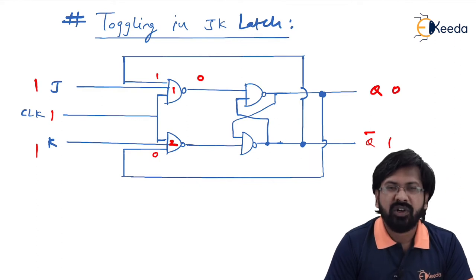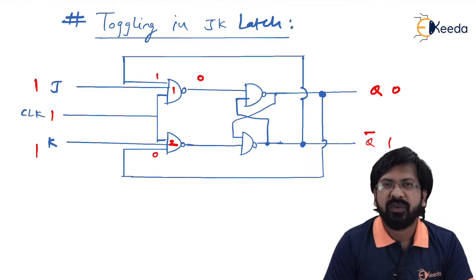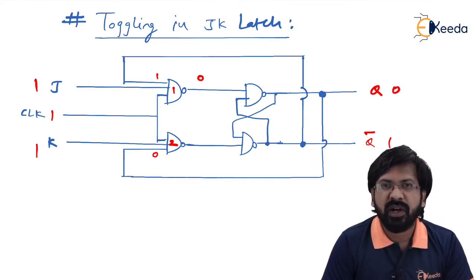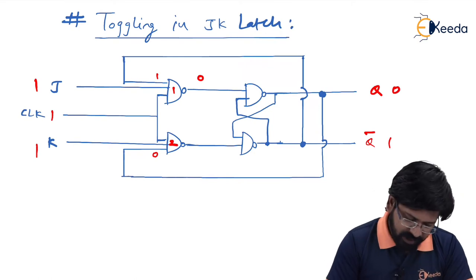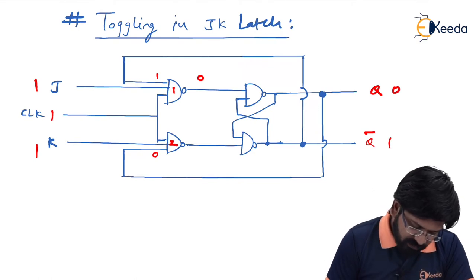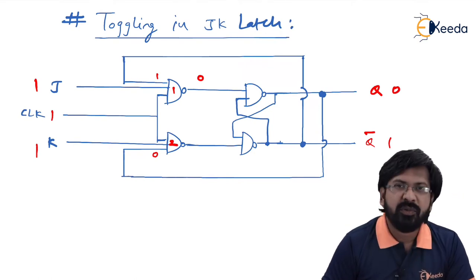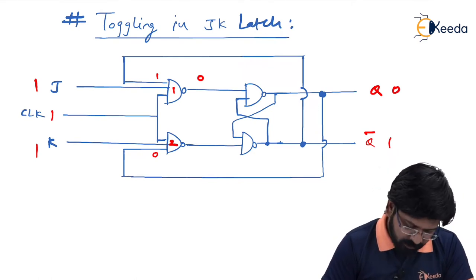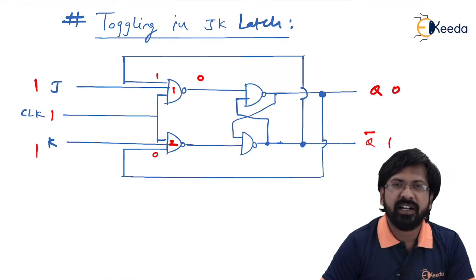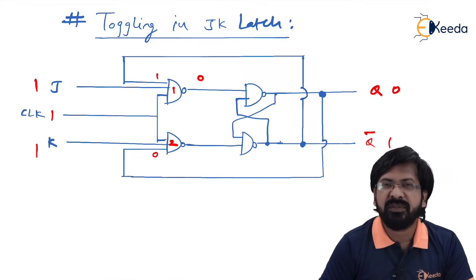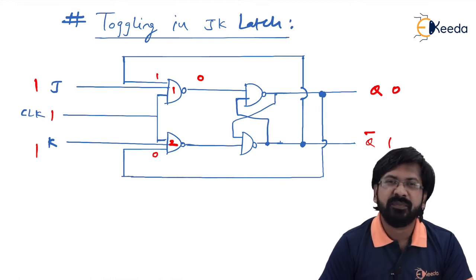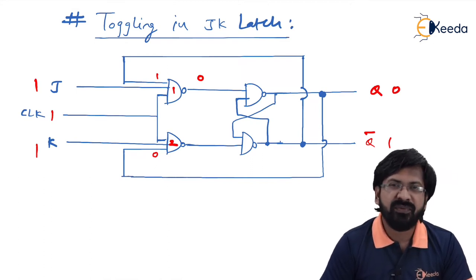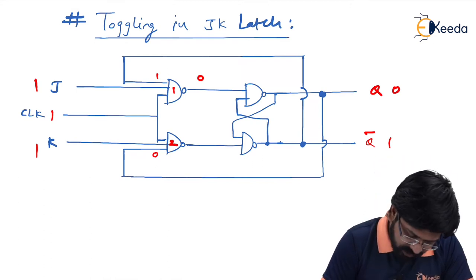Since the NAND gate has the property that when all inputs are 1 the output is always 0. For the second NAND gate, one of the inputs is fixed to 0, so by default the output is 1.